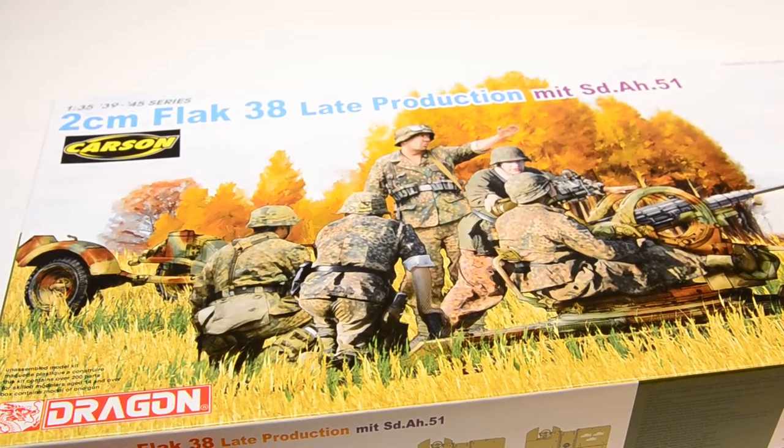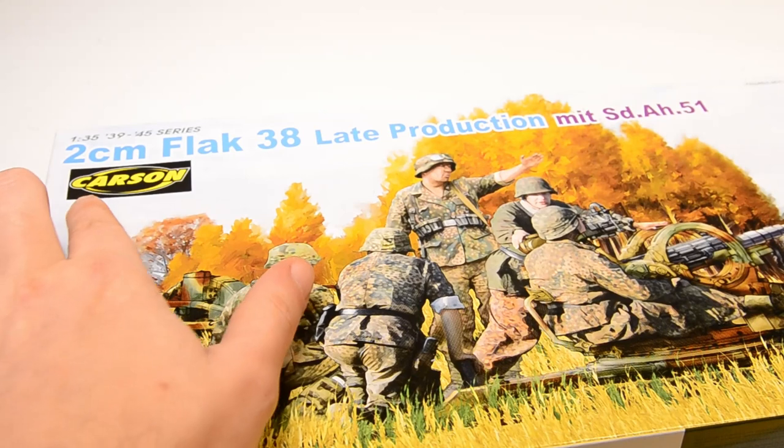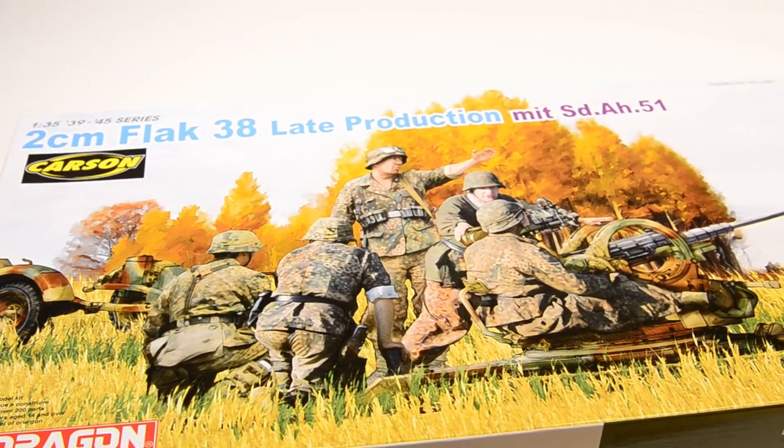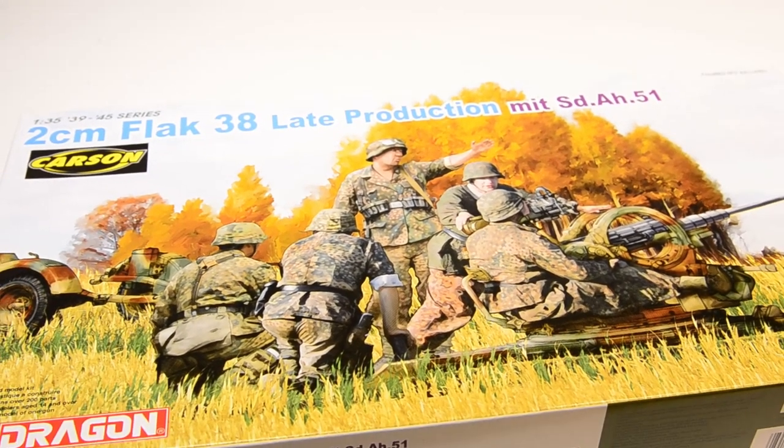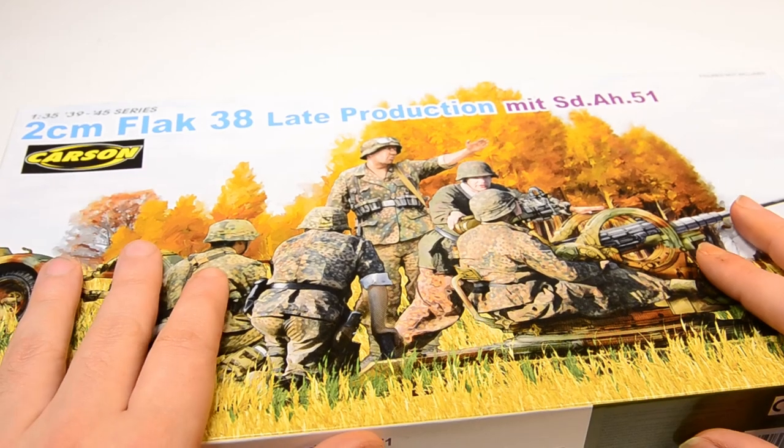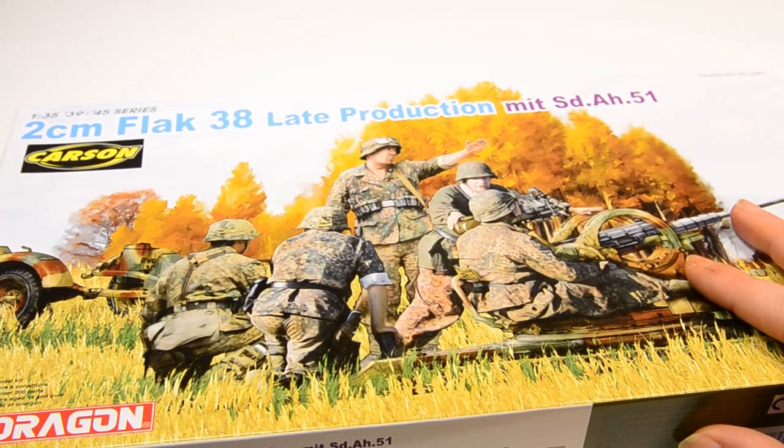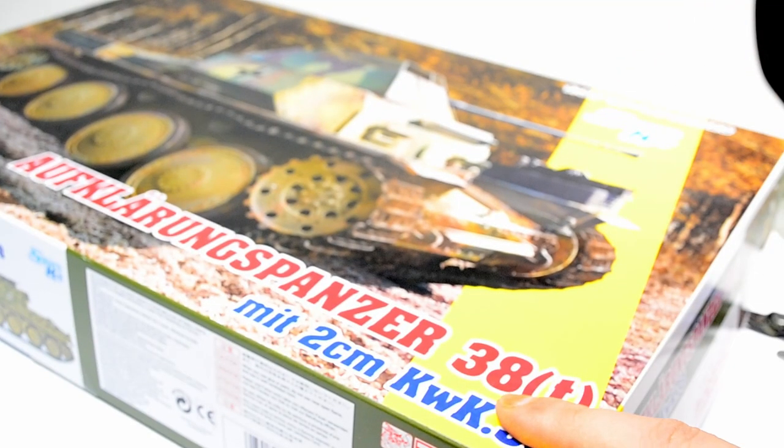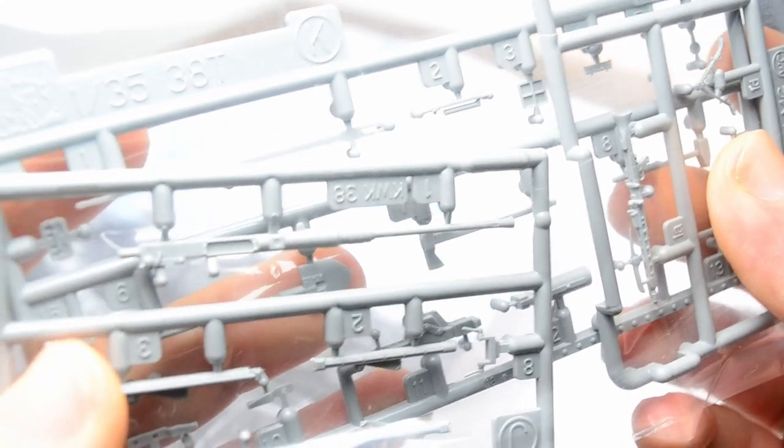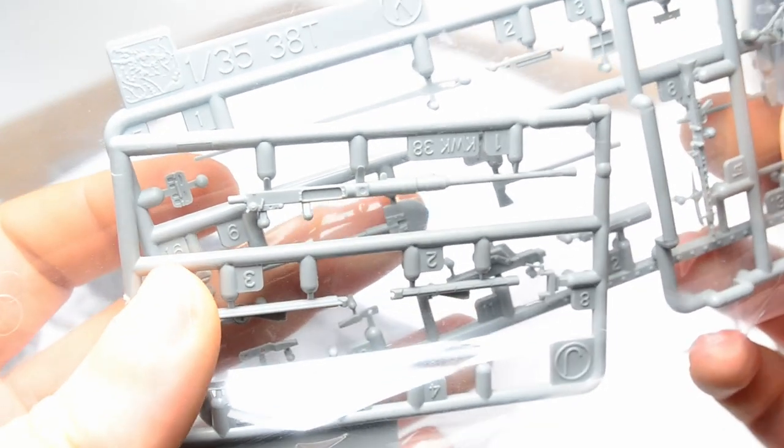Welcome everybody, today with a build video, the two centimeter flak 38 late production with trailer. This is one of the really nice Dragon kits, some small project that goes together fine. And why the heck does this even matter, buying or building a flak? Well, this weaponry was installed in many variations and vehicles, basically all reconnaissance vehicles were fielded with this one.